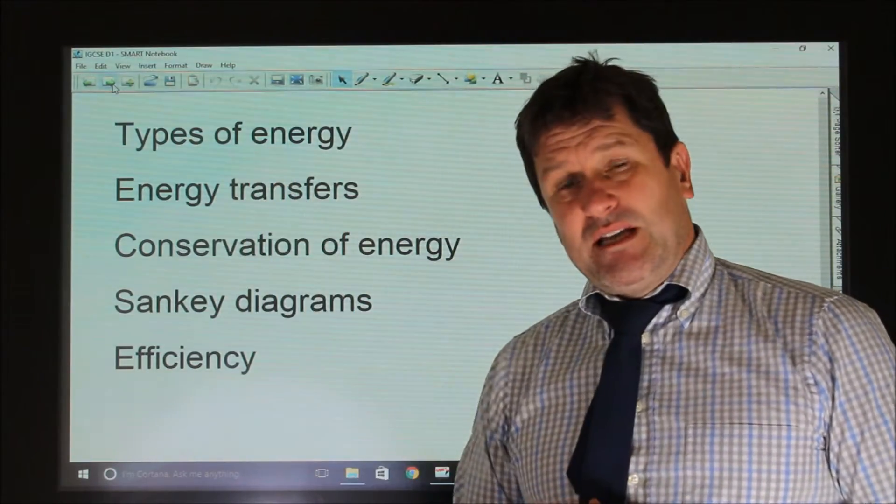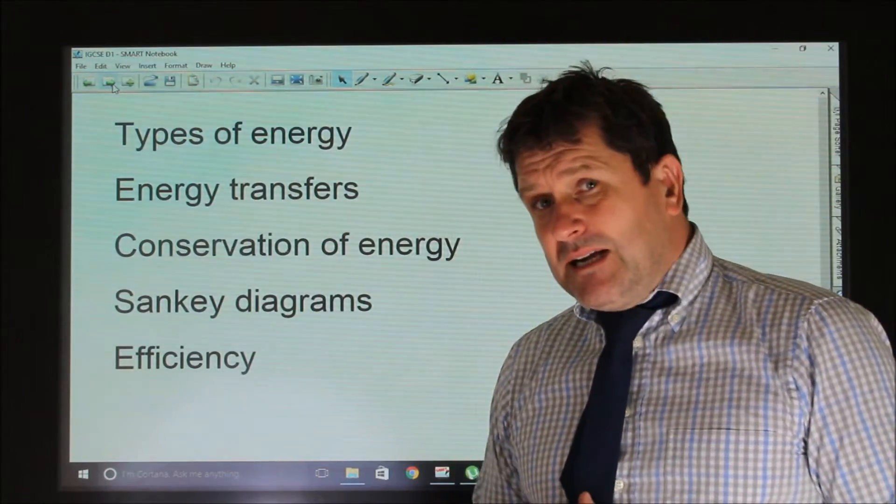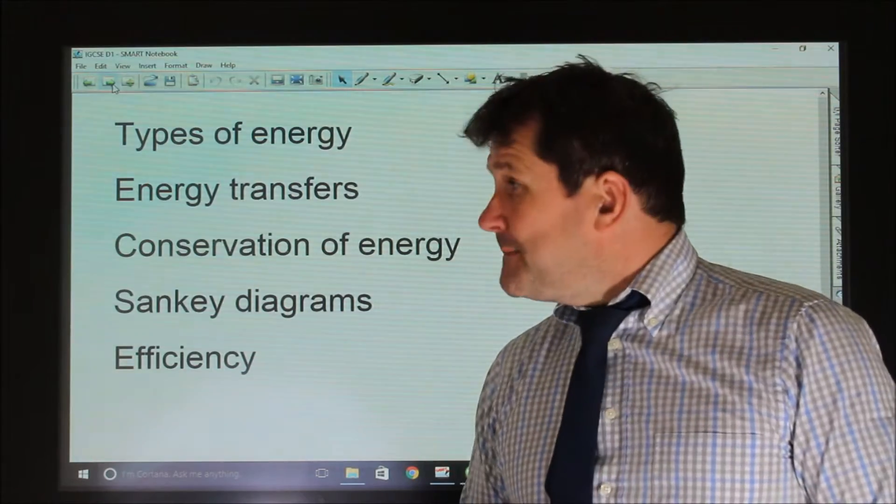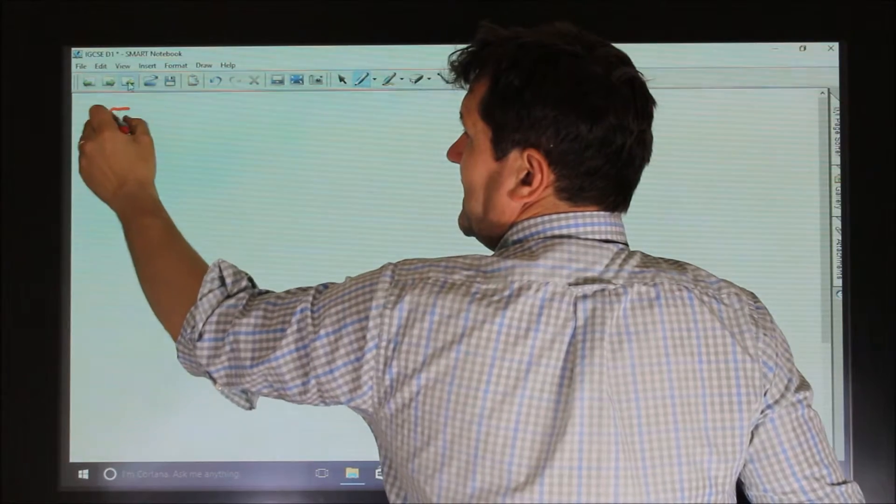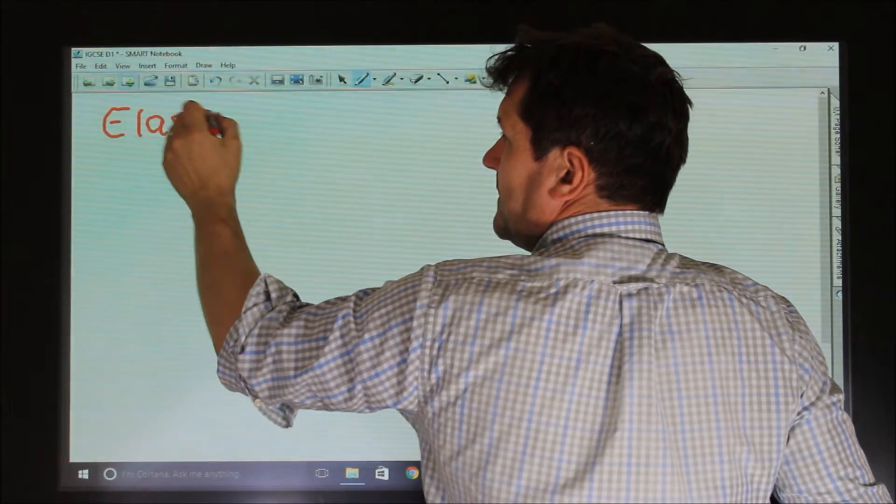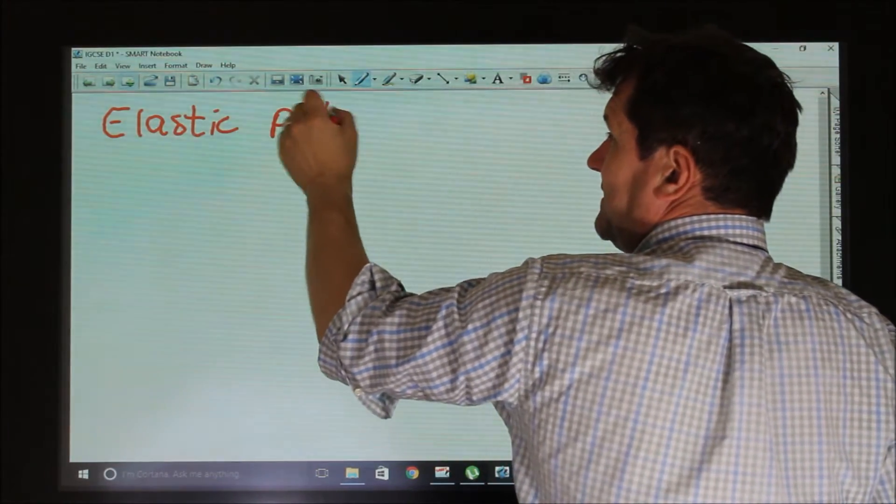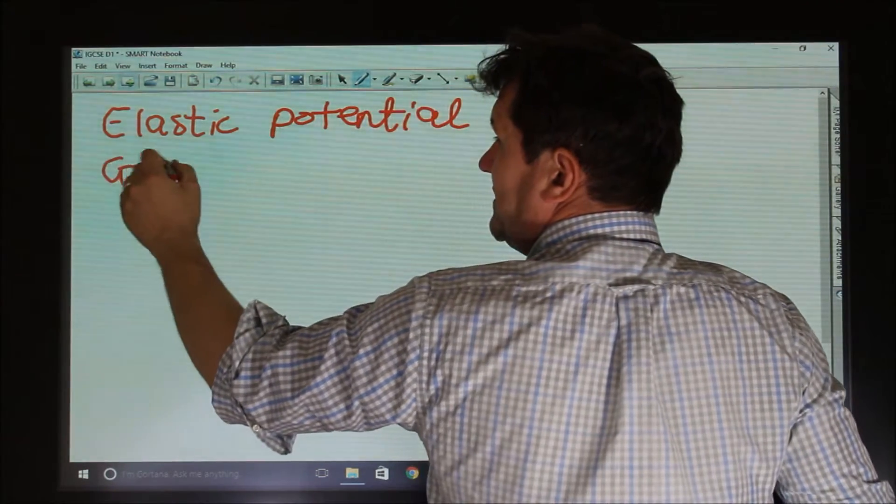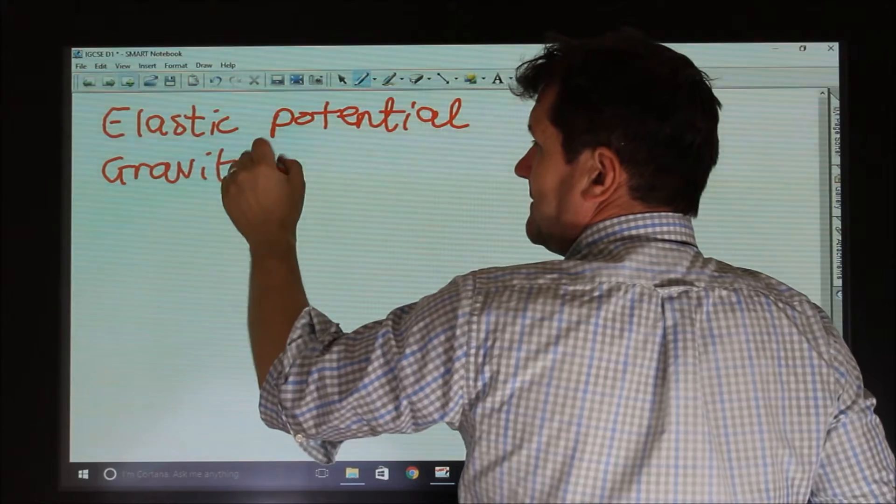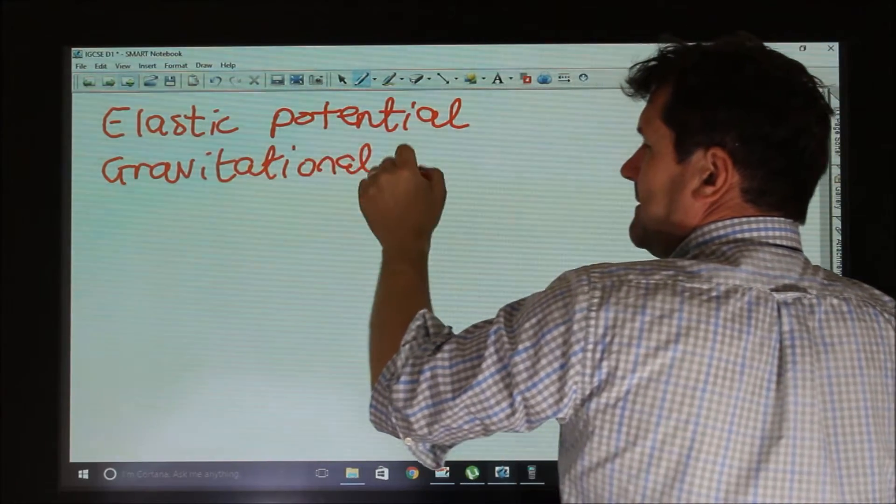So the first thing we need to remember is that there are 8 types of energy if we don't count nuclear. Our 8 types of energy are elastic which is a potential energy, gravitational potential,